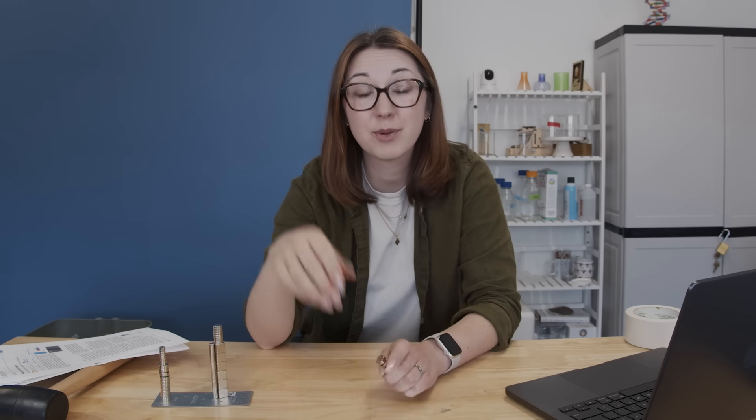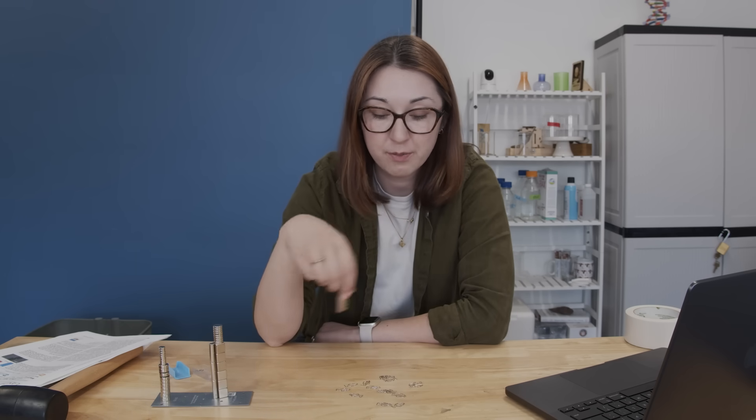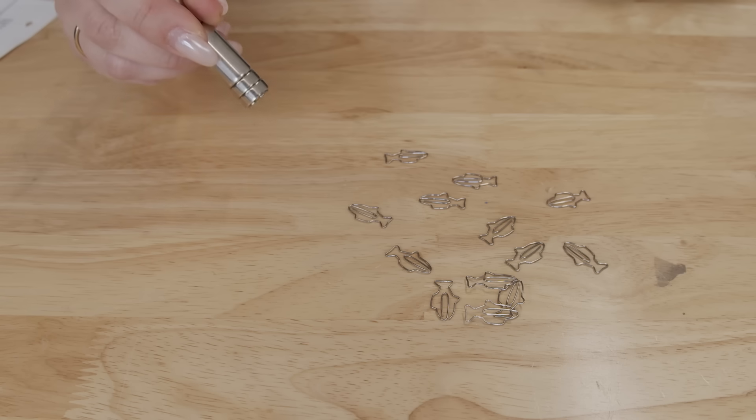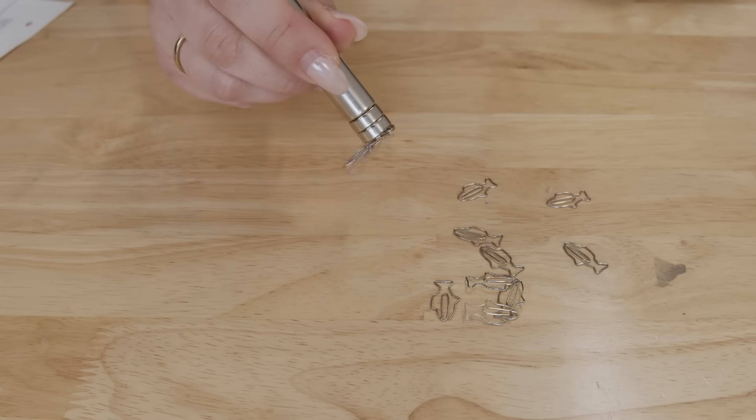If those tiny magnetic fields start to align in a material you can start to get magnetic domains and if you get a bunch of magnetic domains that all align in a material you can get a magnet. Now if you bring that magnet close to another material with unpaired electrons you can start to align their magnetic domains as well and attract them.